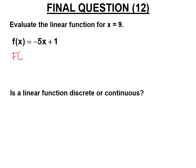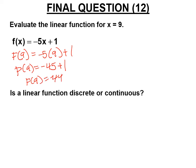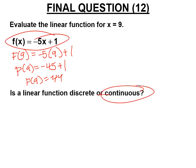Let's evaluate using function notation: f(x) = -5x + 1, so f(9) = -5(9) + 1 = -45 + 1 = -44. Is a linear function discrete or continuous? It's continuous — it has a y-intercept of 1 and slope of -5, going on forever as a continuous line. So linear functions are always continuous. Vertical lines are continuous too, but they're relations, not functions.